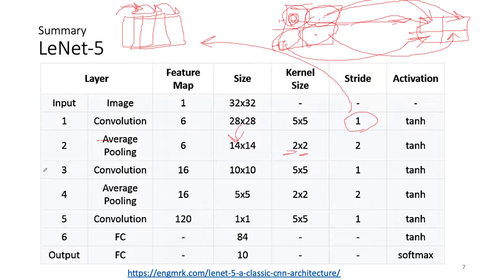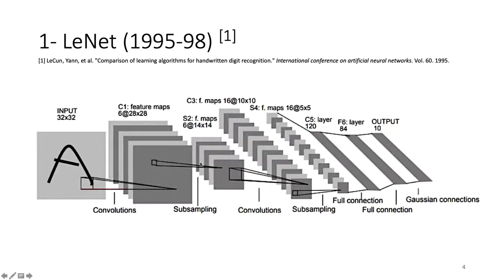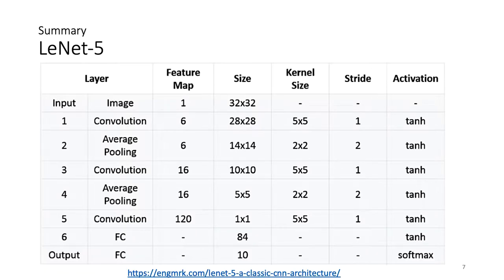The next convolution layer has 16 feature maps with a 10×10 filter kernel, strided with a stride of one on the incoming input. Then another average pooling further flattens the image to gain higher-level features. The network starts wider and then gets flatter and longer. Finally, the last convolution has 120 feature maps with a size of 5×5, and hyperbolic tangent as activation. The fully connected layer outputs the 10 classes you want to predict.